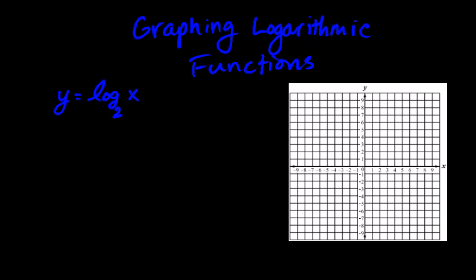So a couple key components to a logarithmic function. There is a vertical asymptote, and it is at x equals 0 in this problem, because for a logarithm, you can't plug 0 in for x. So it is impossible to do the log base 2 of 0, because 2 to some power cannot equal 0. If we set up and write it as an exponential, this actually doesn't work. It doesn't have an answer. So the reason the vertical asymptote is at 0 is because you can't do the logarithm of 0.